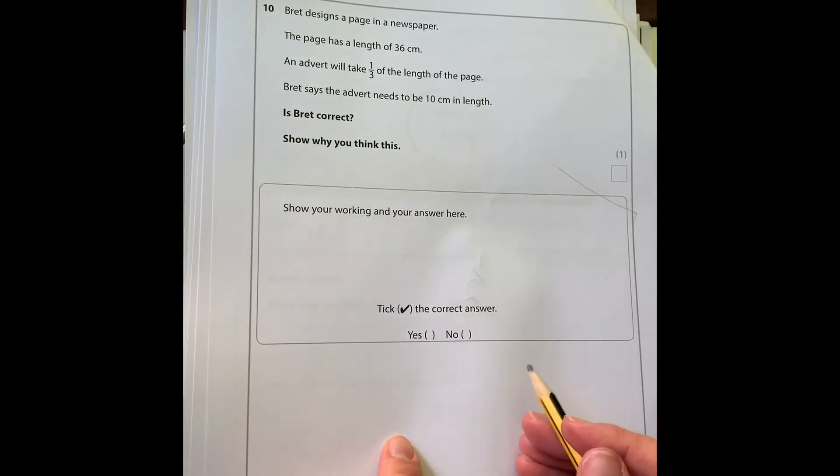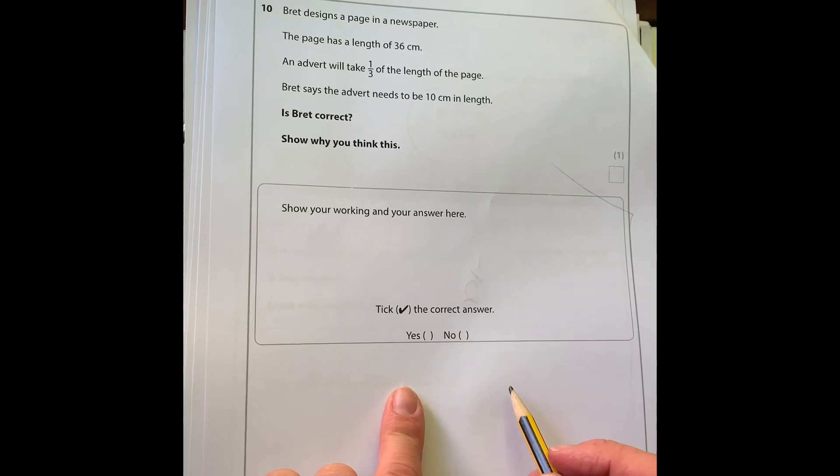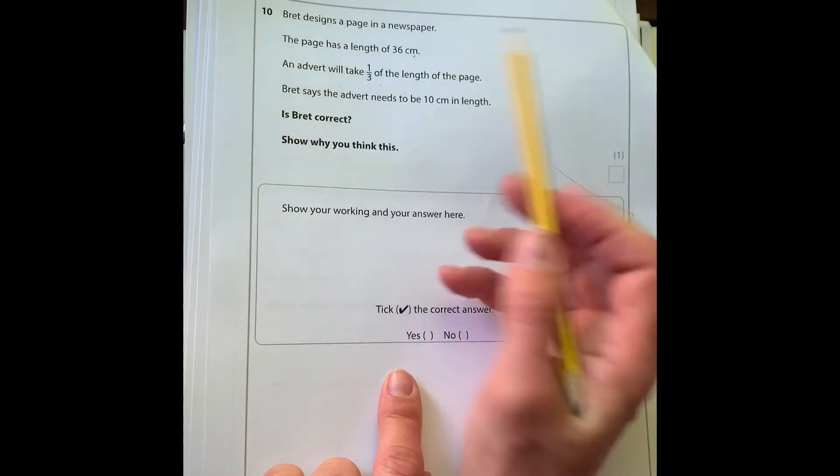Brett designs a page in a newspaper. The page has length of 36 centimeters and an advert will take one third of the length of the page. Brett says the advert needs to be 10 centimeters in length. Is he correct?